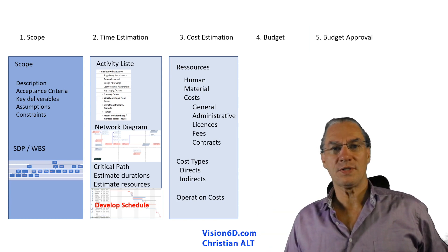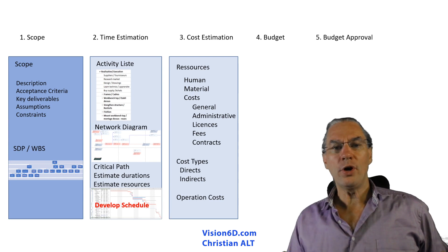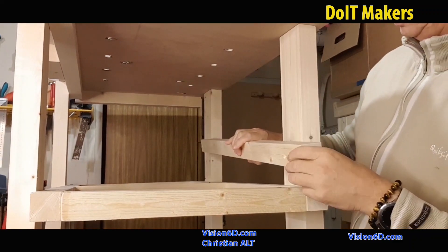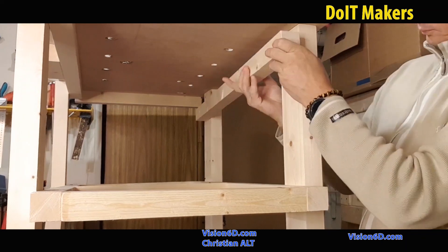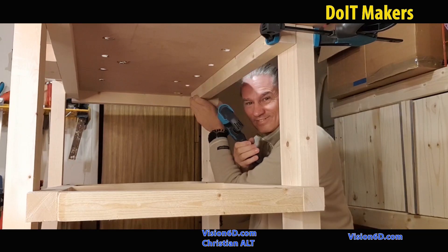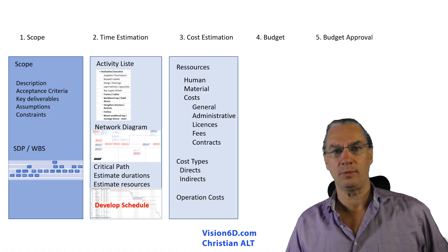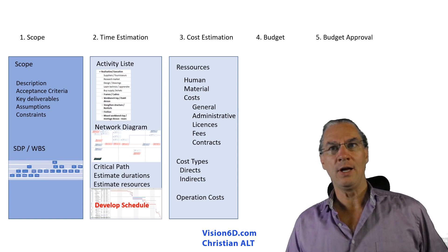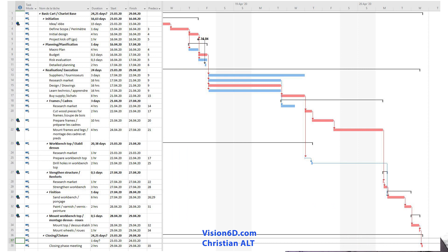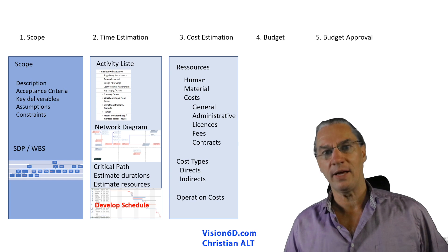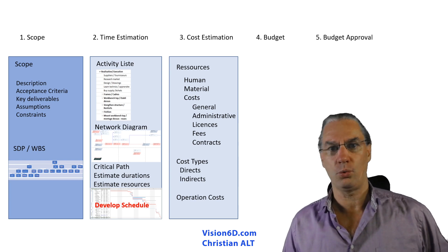As you can see, those steps are quite simple. When you have a really complex project, you have to go through all of them. When you have a simpler project, like the mobile workbench, it's possible to develop the schedule more directly. Directly from the work breakdown structure decomposition, you can enter data straight into MS Project, doing a mix of all the elements necessary for time estimation in a much simpler way.